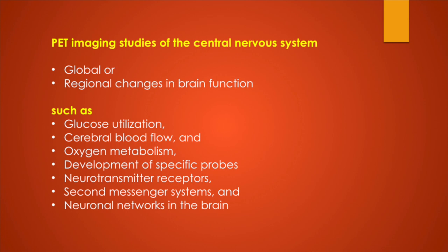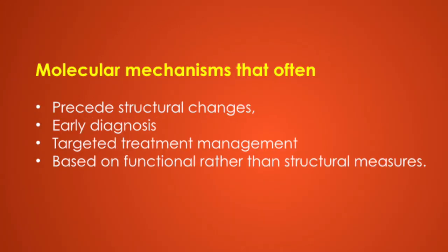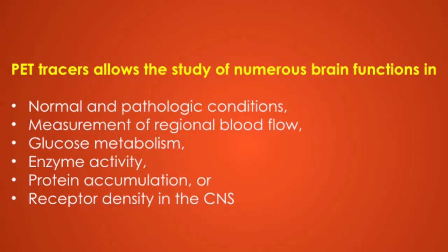Coming to PET imaging studies of the central nervous system, there are global or regional changes in brain function such as glucose utilization, cerebral blood flow and oxygen metabolism, then development of specific probes, neurotransmitter receptors, second messenger systems and neuronal networks and brain parenchyma. As everybody knows, molecular changes precede structural changes, and thus we can do early diagnosis with targeted treatment management based on functional rather than structural measures. PET tracers allow the study of numerous brain functions in normal and pathological conditions, including measurement of regional blood flow, glucose metabolism, enzyme activity, protein accumulation and receptor density in the CNS.